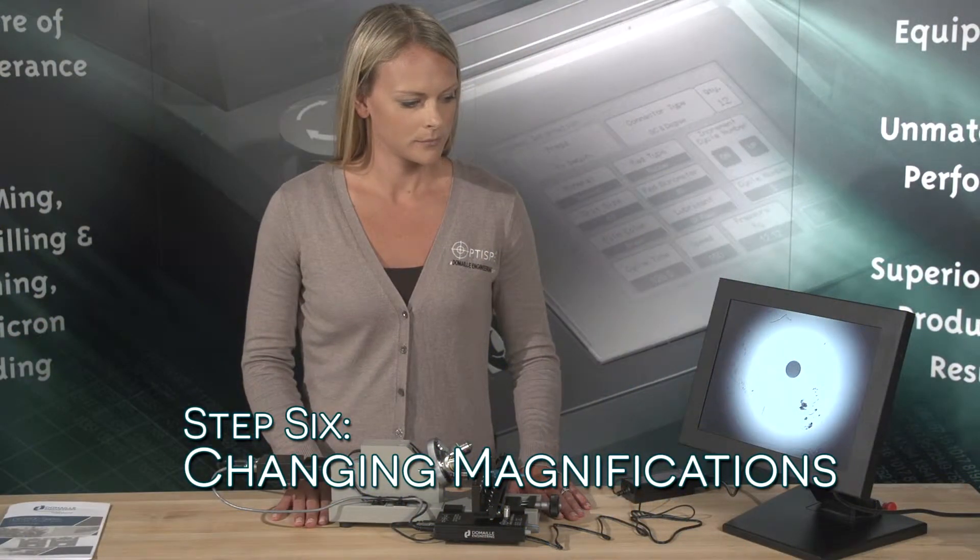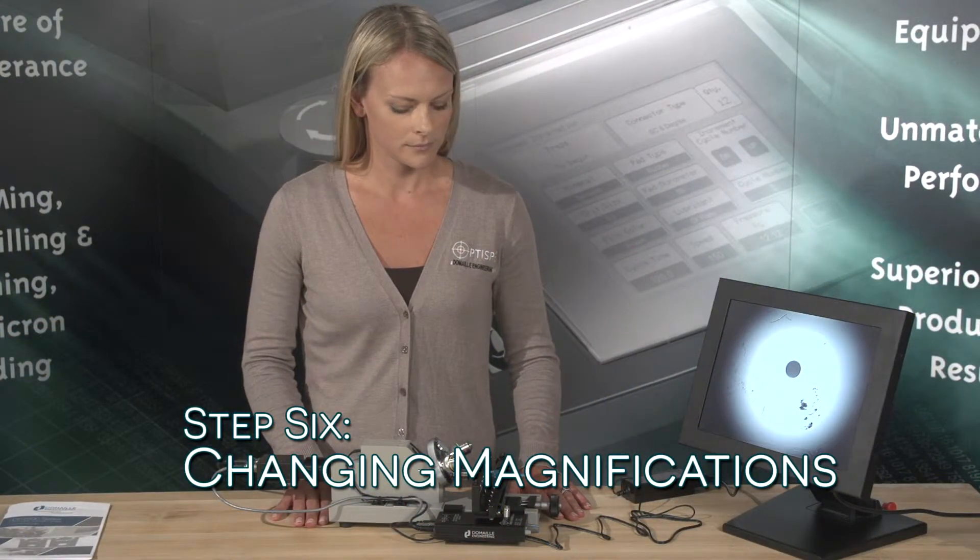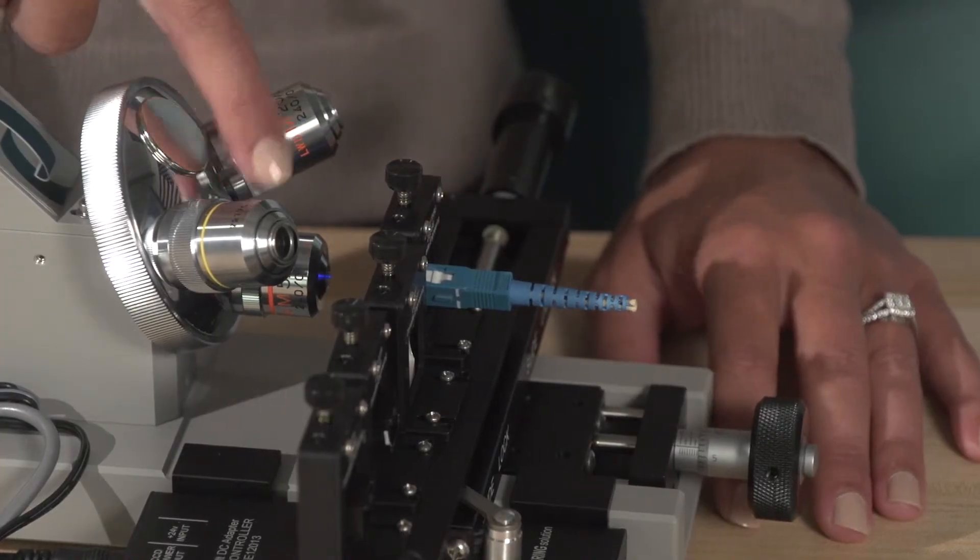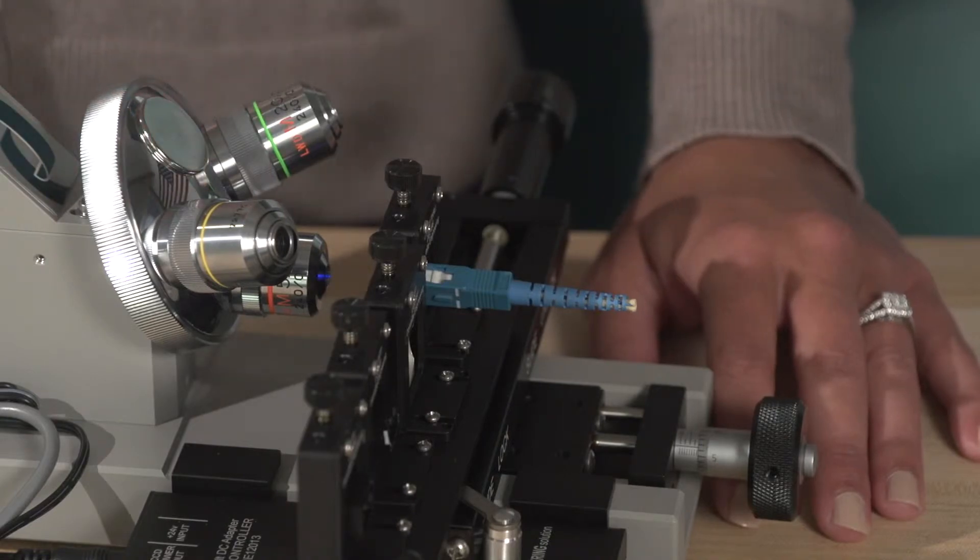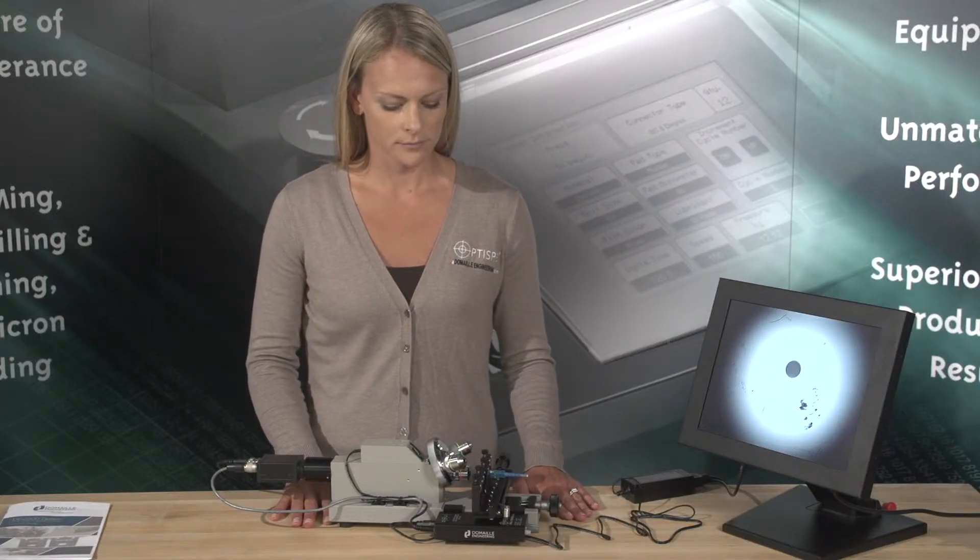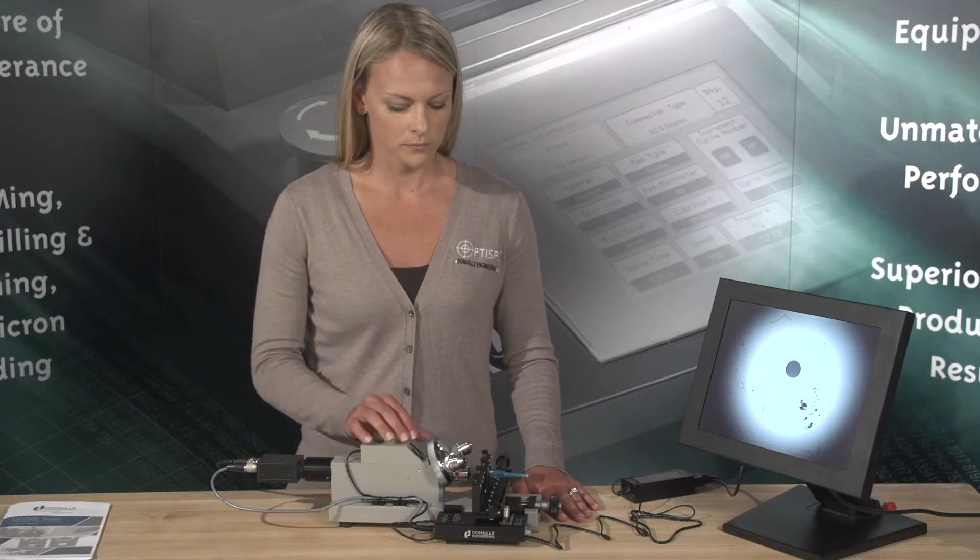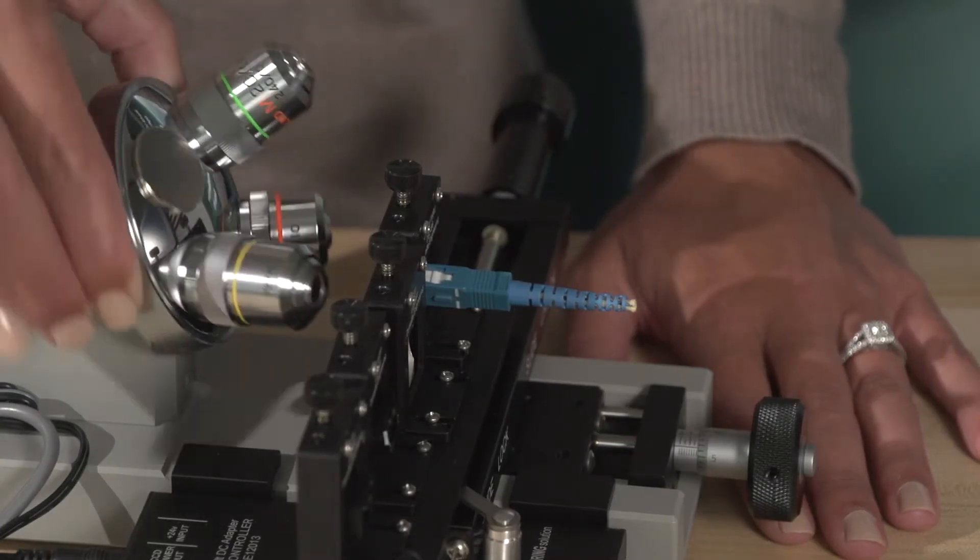Step 6: Changing Magnifications. The DE2503 is equipped with three objective lenses: 5X, 10X, and 20X, mounted to the microscope four-hole turret. This allows the operator to quickly change magnifications when inspecting connectors.